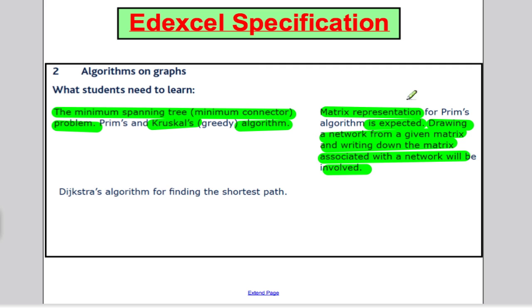In green is what we already know - how to represent a graph using a matrix and how to do Kruskal's algorithm. In this session, we're going to learn about Prim's algorithm for the minimum spanning tree problem, and we're going to recover the matrix representation for Prim's algorithm.